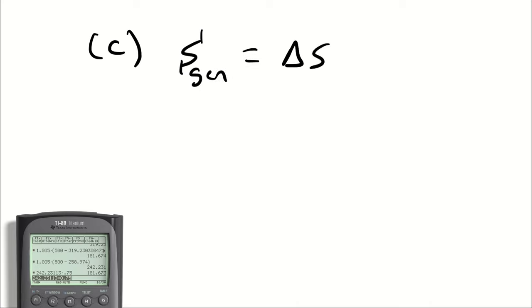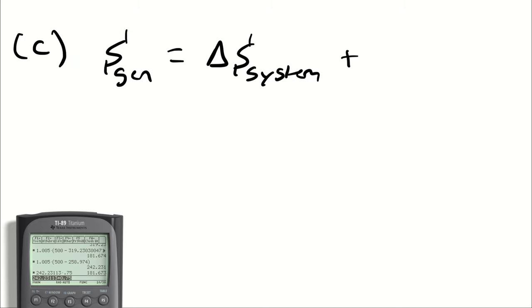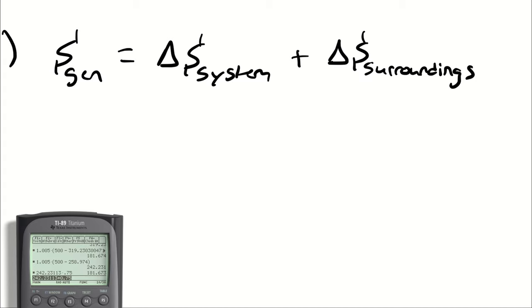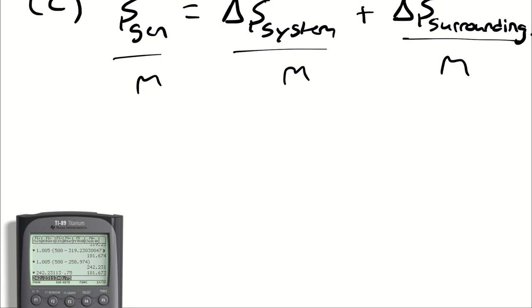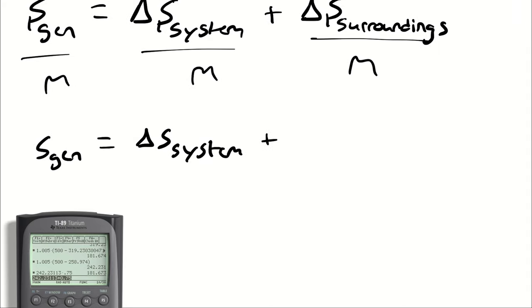If I divide all three terms by mass, then I can say little S-Gen is equal to delta little S of the system plus delta little S of the surroundings.